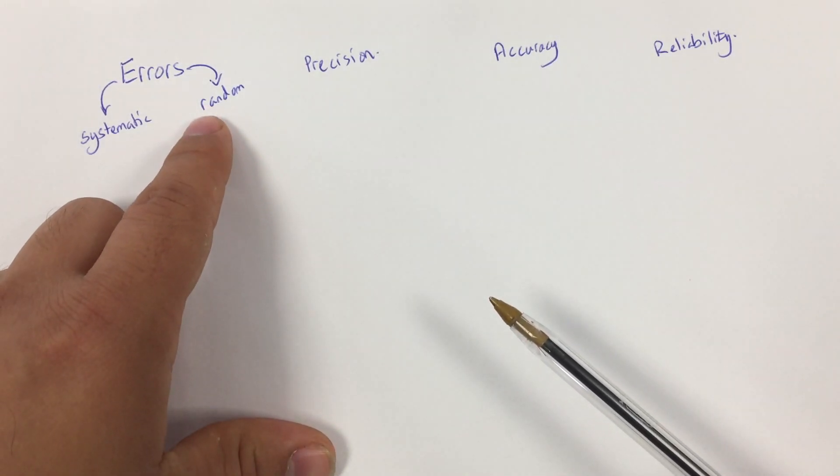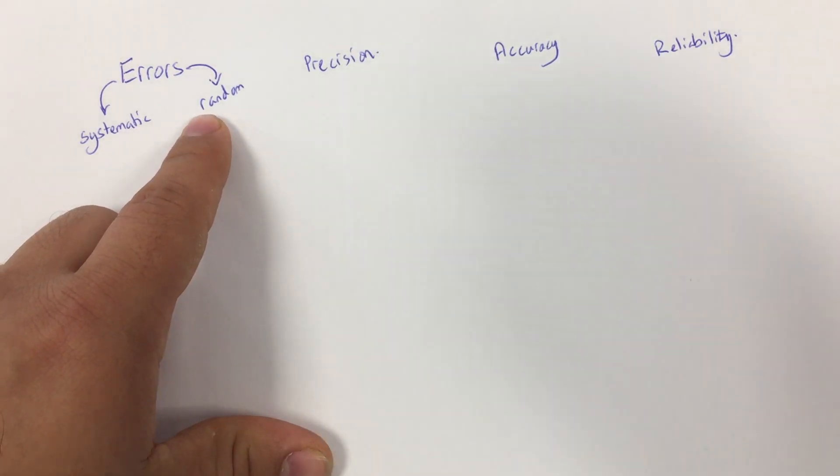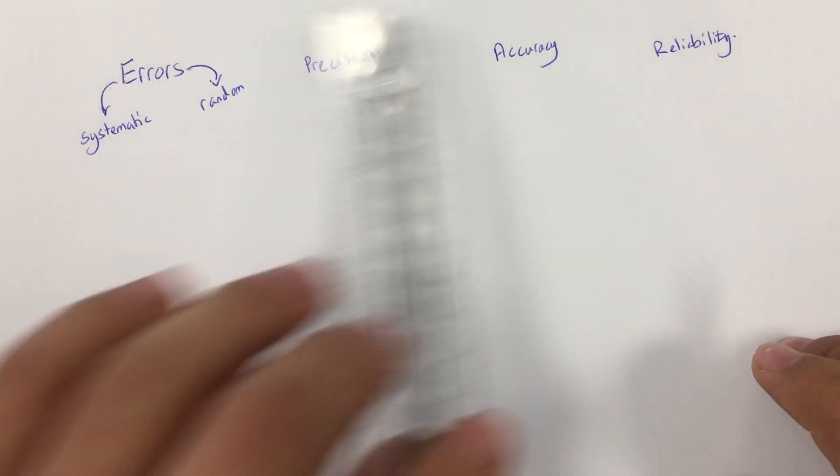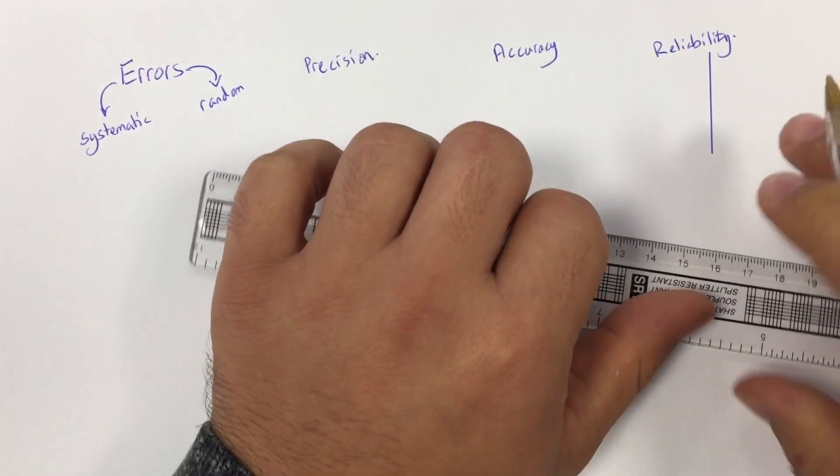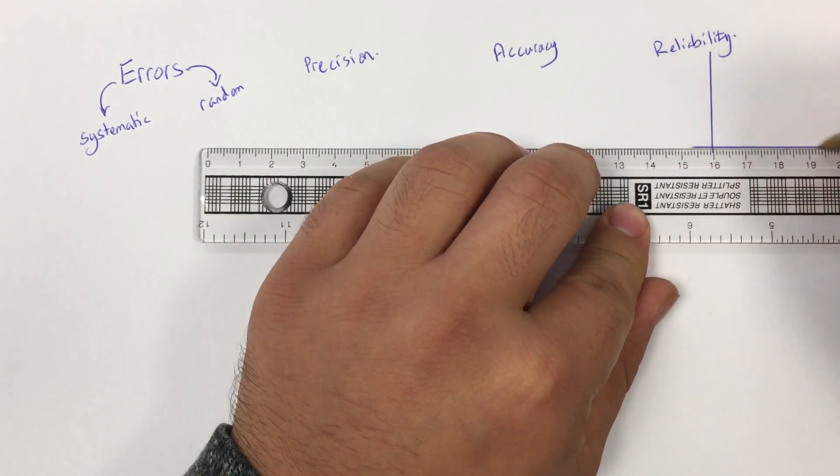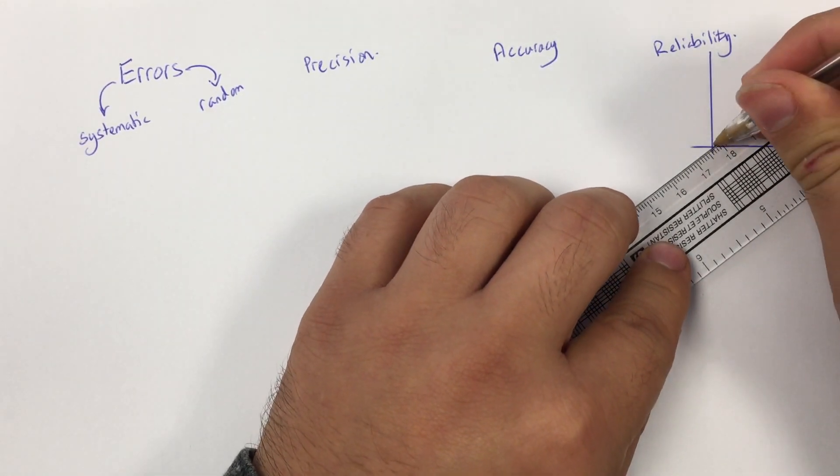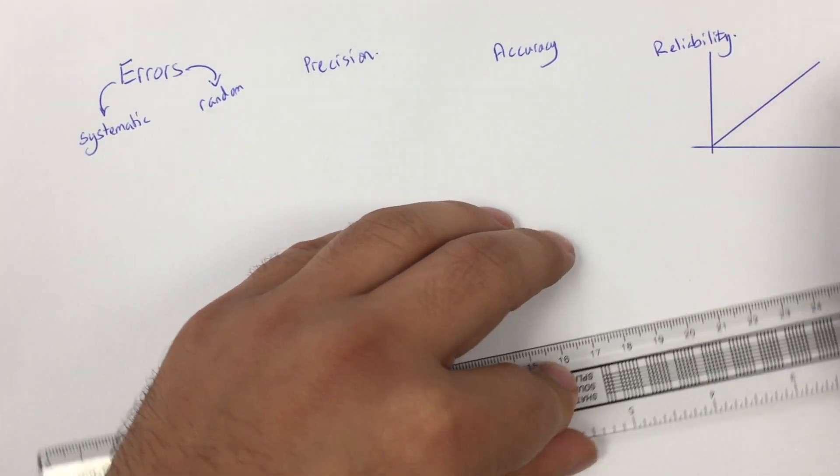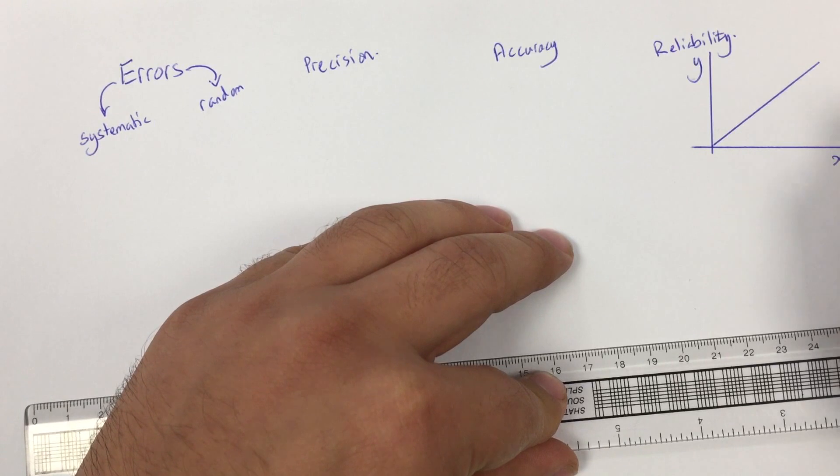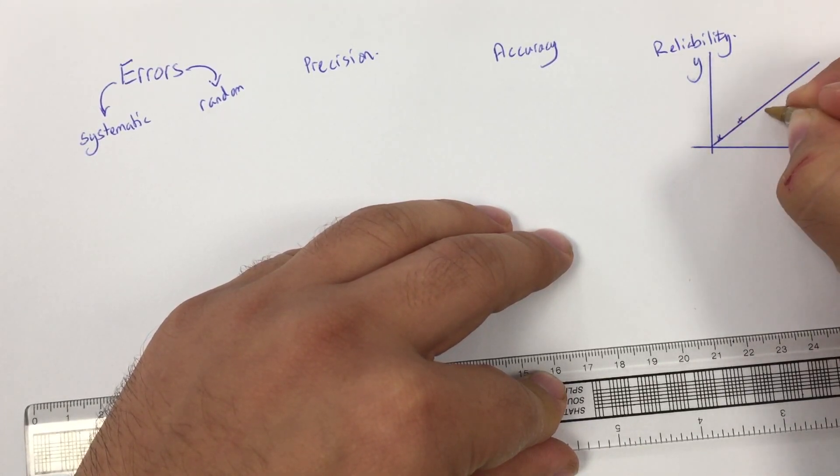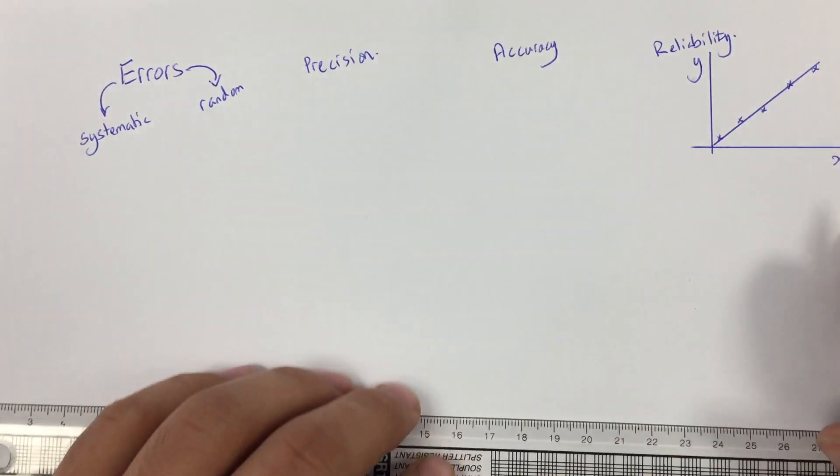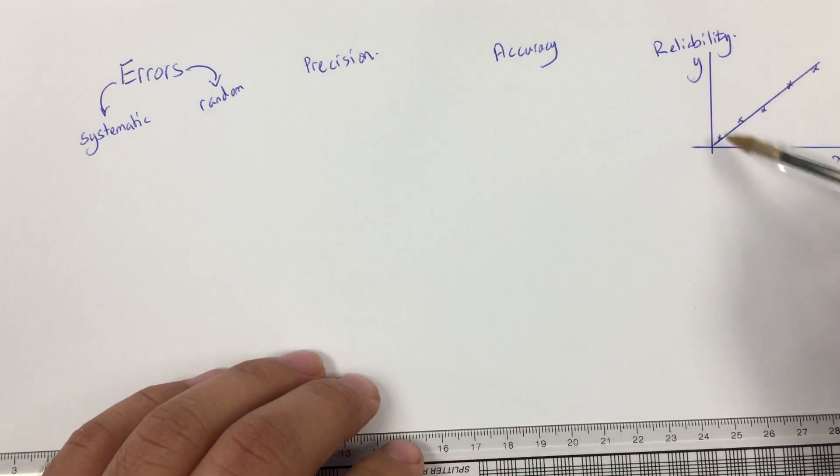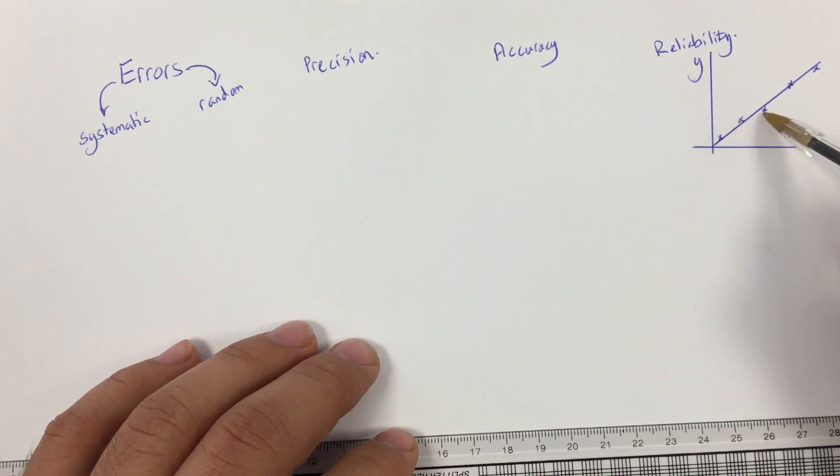Random error produces small amounts of scatter on a graph. For example, if I just talk about reliability for a second, basically the only time we really comment on reliability in an experiment is we talk about the scatter of a particular graph. So if I have a graph, and my line of best fit is a beautiful straight line, and I have points that look like that, then I would say that this graph, or these results, are reliable because the scatter either side of the line of best fit is very, very small, very minimal.